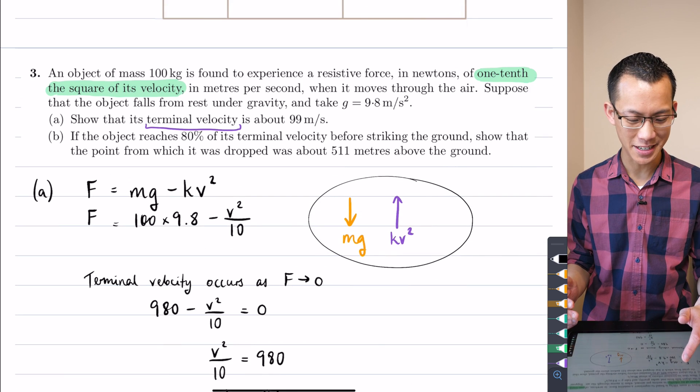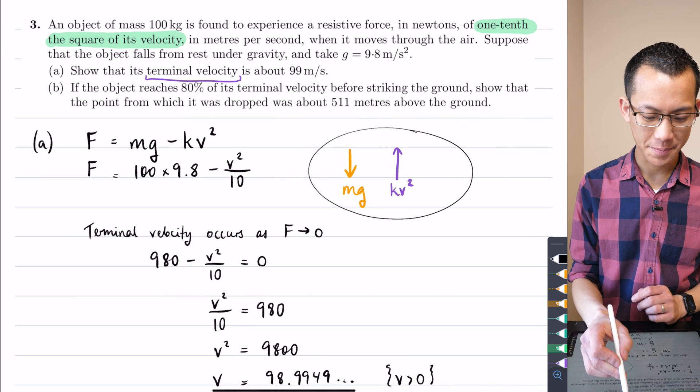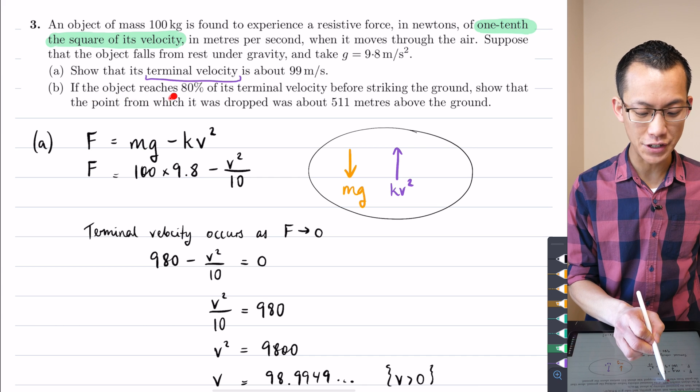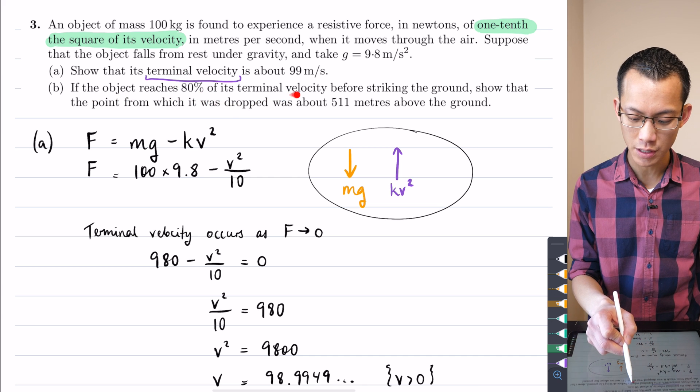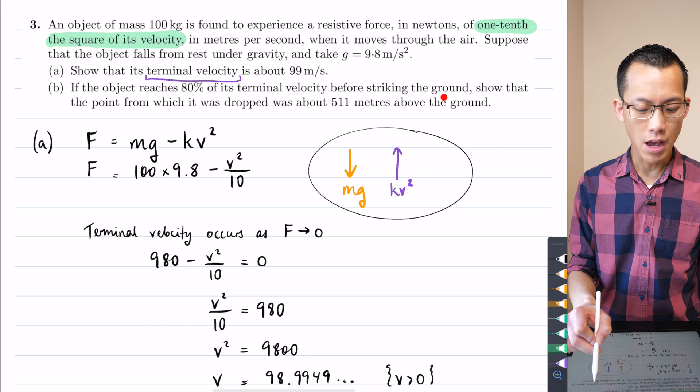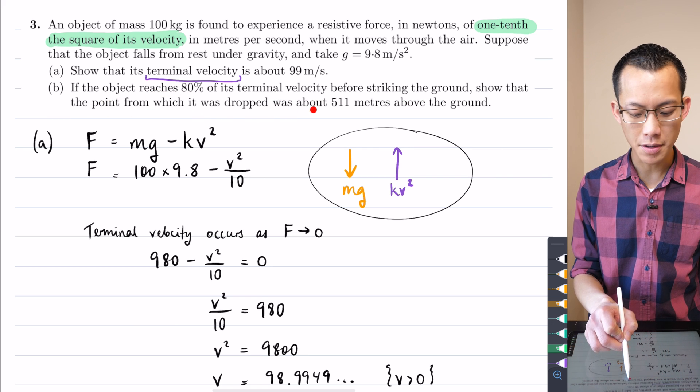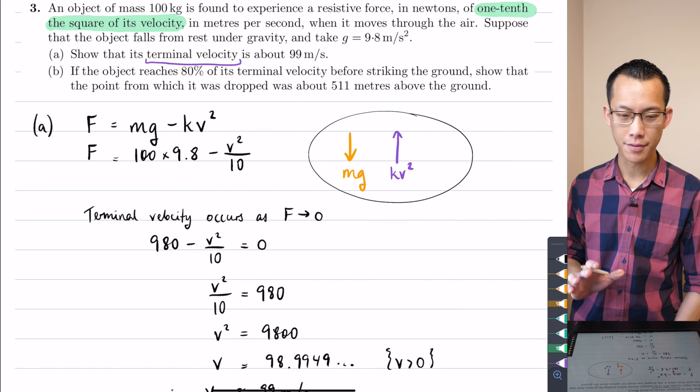Okay, great. I have a terminal velocity. Now what do we ask next? If the object reaches 80% of its terminal velocity before striking the ground, show that the point from which it was dropped was about 511 meters above the ground.